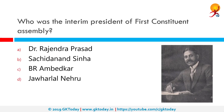Who was the interim president of the first Constituent Assembly? The correct answer is Sachidanand Sinha. Sachidanand Sinha was an Indian lawyer, parliamentarian and journalist. He was also a member of the Bihar Legislative Assembly. In 1946, he was named the interim president of the Constituent Assembly of India on 9th December 1946. He was replaced by Dr. Rajendra Prasad after an indirect election on 11th December 1946.